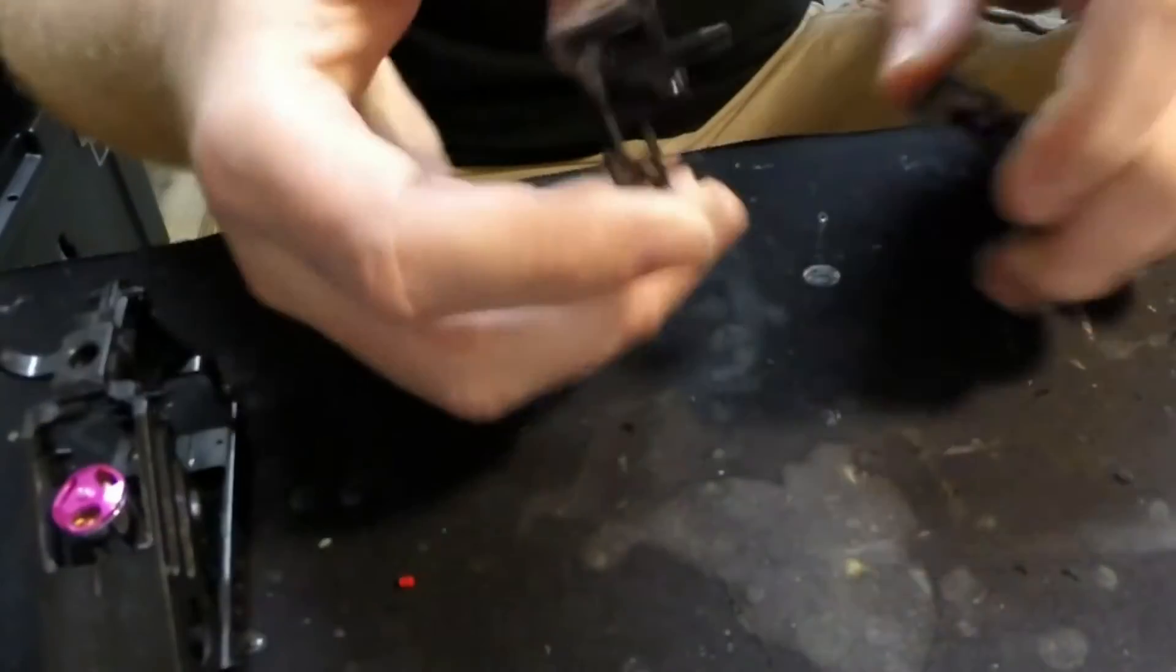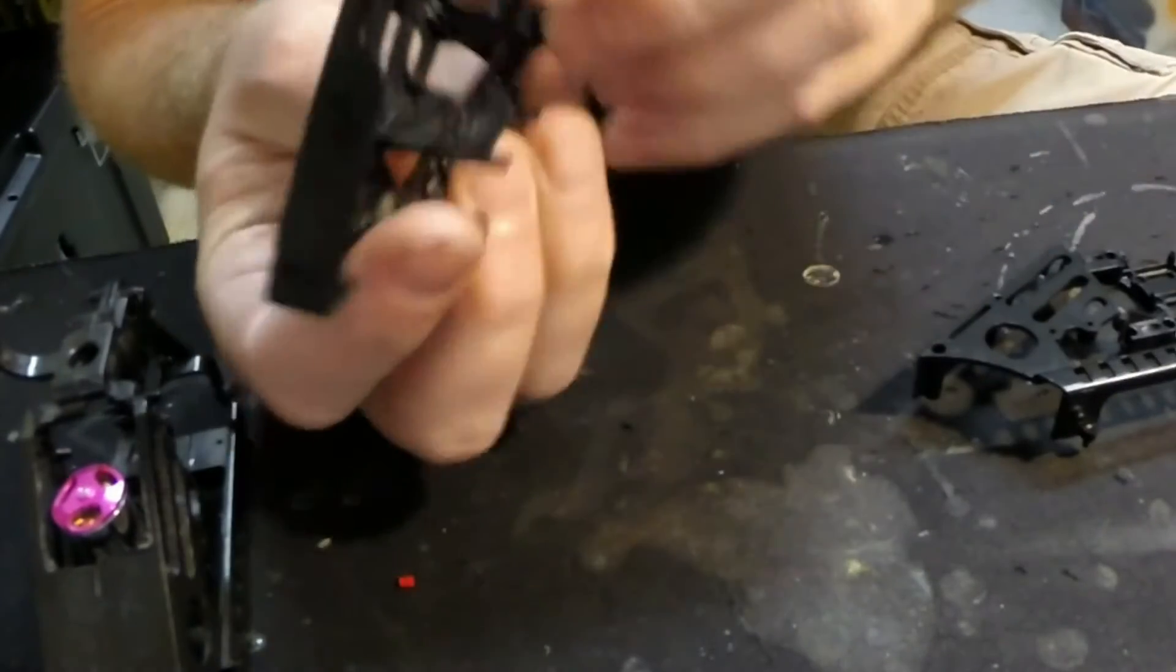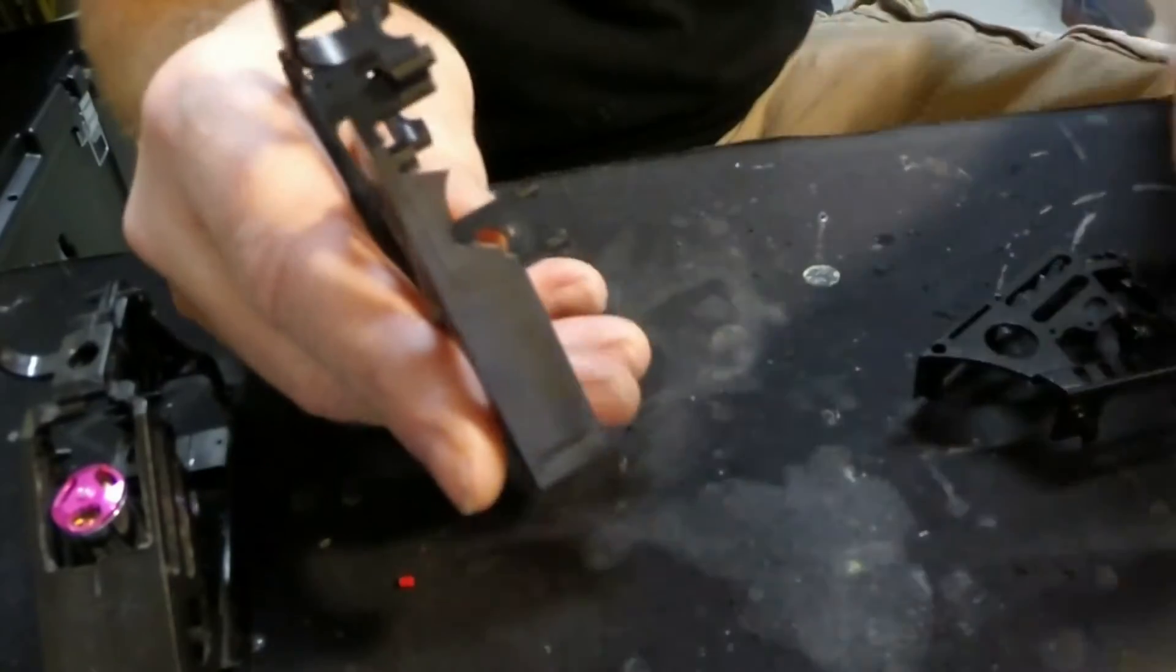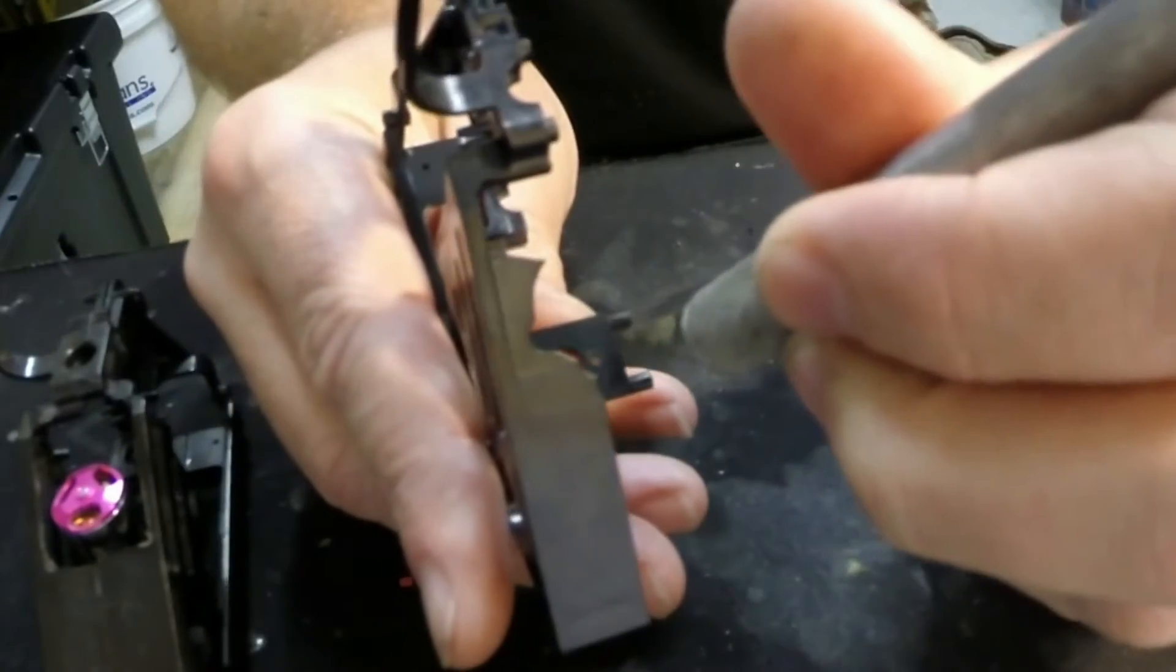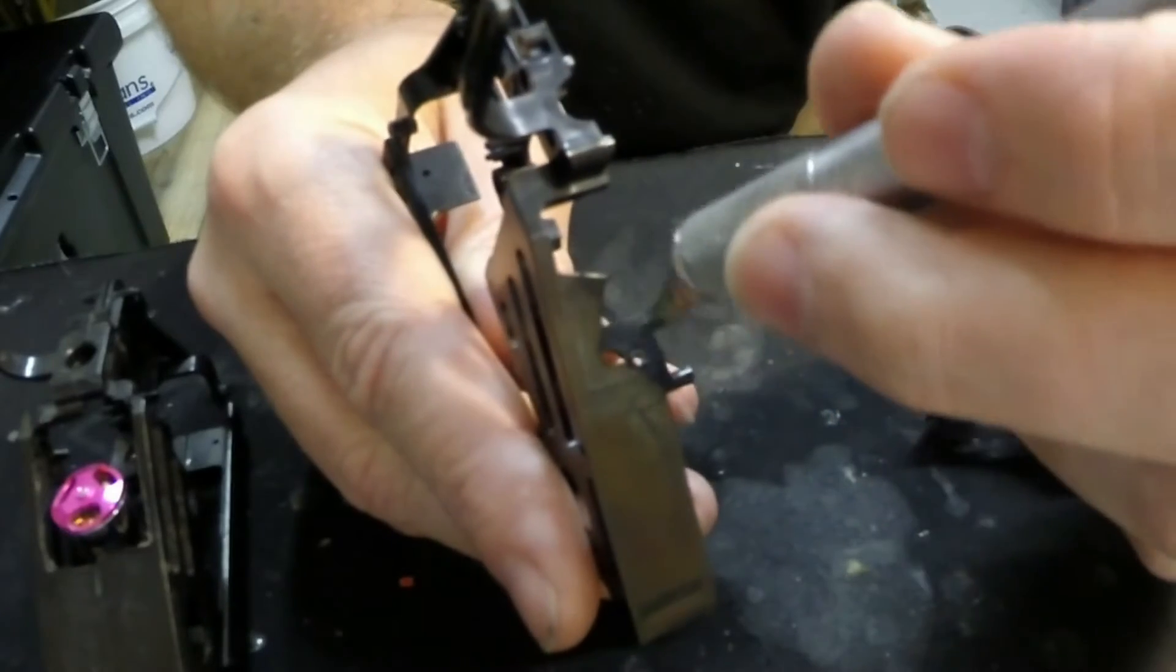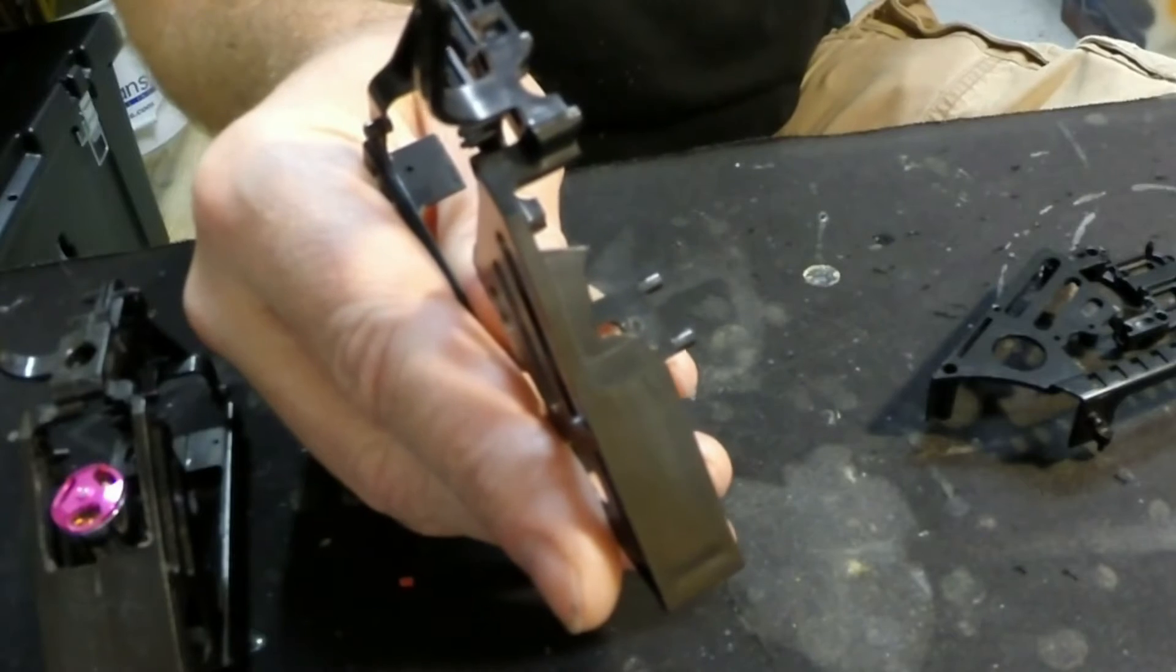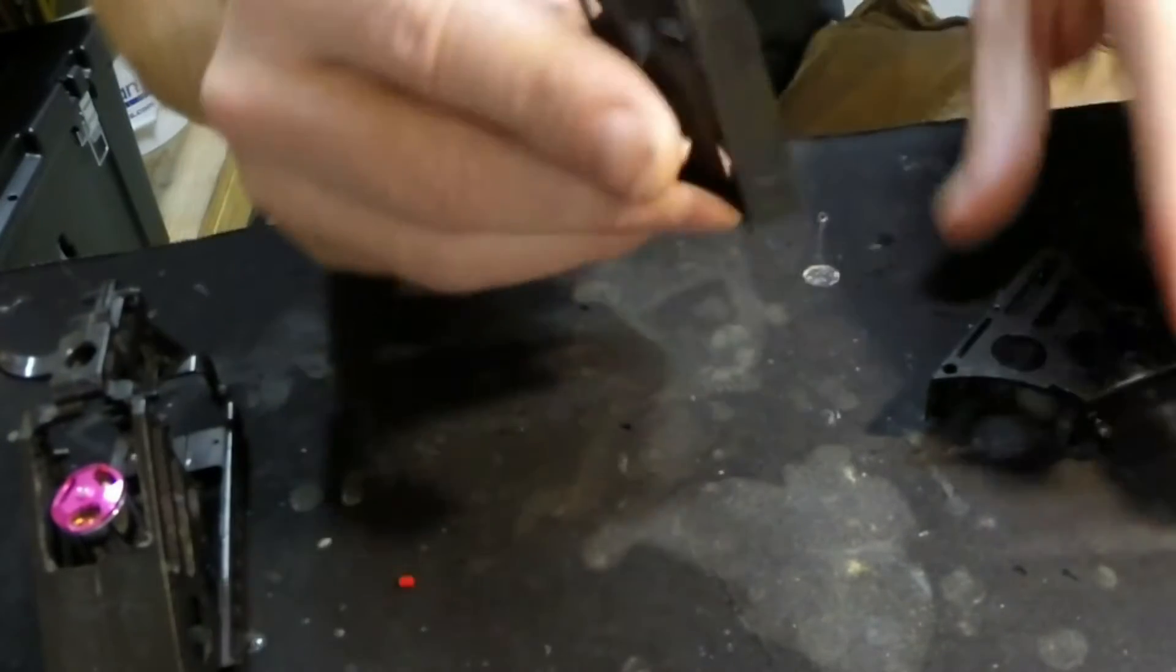Step three is to slot out the motor mount holes on the plastic frame. I use an X-Acto knife. I insert it in the holes with a little pressure and carefully twist to remove material. Do that forward and back on both sides. This is going to allow you to move the motor forward and back to adjust the gear lash.